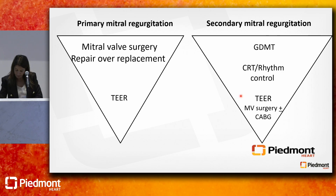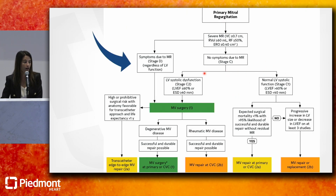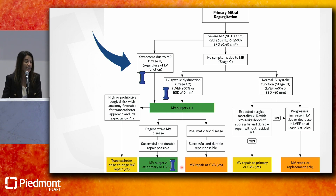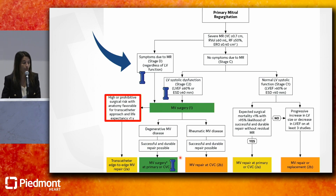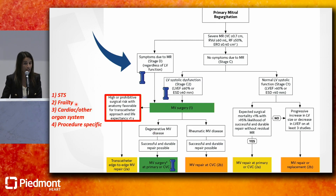With primary MR, if you have symptoms due to MR, it's a class one indication for intervention. If your EF starts to decline or LV end-systolic dimension increases, that's also class one. Risks for surgery are assessed by STS score, frailty, ADLs, cardiac condition, comorbid conditions such as CKD, and ability to rehab. Procedure-specific factors include prior surgery, porcelain aorta, and prior tracheostomy.